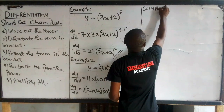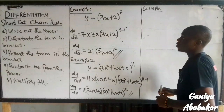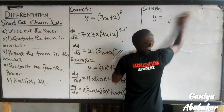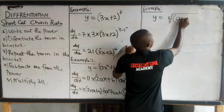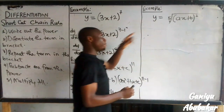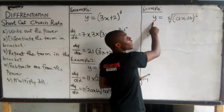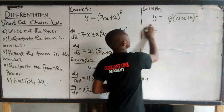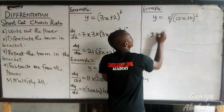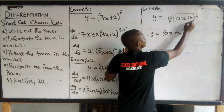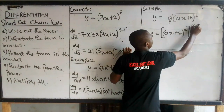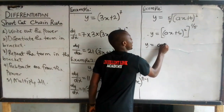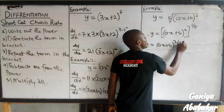Example 3: if I have y equal to the fifth root of (ax + b) all to the power 2. Before applying the shortcut, let me simplify this. The fifth root can be written as power 1 over 5, so y equals (ax + b) to the power 2 multiplied by 1 over 5, which gives y equal to (ax + b) to the power 2 over 5.